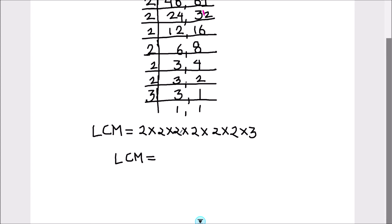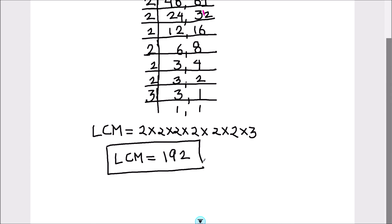2 times 2 is 4, 4 times 2 is 8, 8 times 2 is 16, 16 times 2 is 32, 32 times 2 is 64, and 64 times 3 is 192. So the LCM of 48 and 64 is 192. This is our final answer.